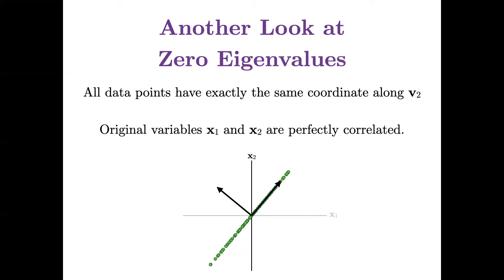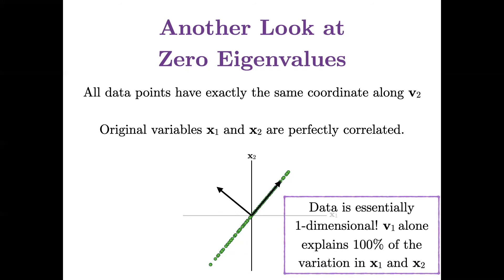That also means that those original variables x1 and x2 are perfectly correlated. The data is essentially one dimensional. So v1 alone explains 100% of the variation in x1 and x2. When I say it explains 100% of the variation, it means I get a perfect representation of that data using just one coordinate along that v1 axis. 100% of the information means that all of the relationships between data points will be perfectly preserved. All the distances from the origin and from each point to every other point.